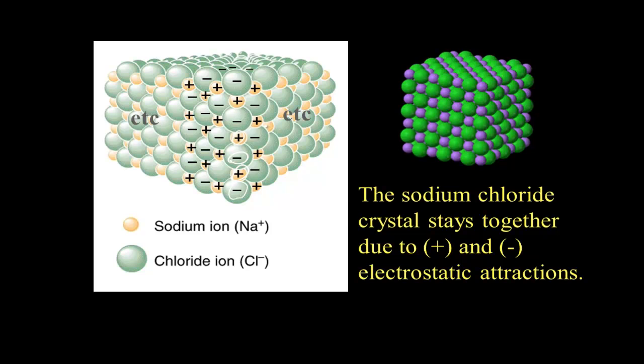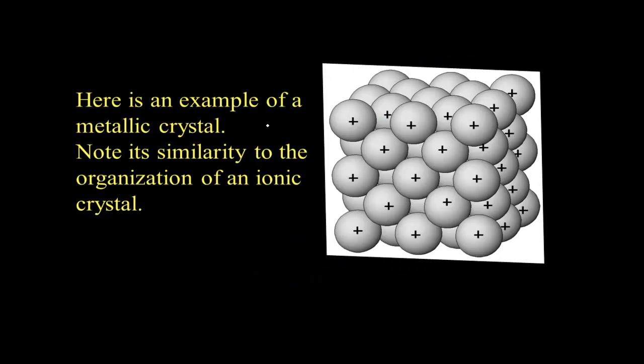Let's look at the arrangement of atoms in a metallic crystal. Very similar to the organization of an ionic crystal, however, they're all positively charged. And just looking at this illustration, you would think that the atoms would completely fly apart by repelling each other due to the positive charge. But if we take a closer look, the electron sea model tells us how the positively charged cations in the metallic crystal can stay together.